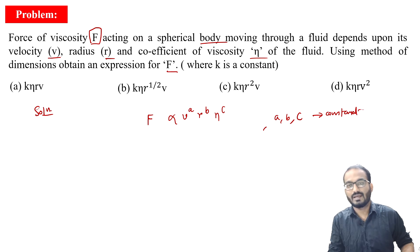Now if we can find out the values of A, B, and C, we can easily establish a relationship between these different quantities and get the expression for F. So just write it: K times V to the power A, R to the power B, eta to the power C. Now we know the dimension of velocity, radius, and coefficient of viscosity.